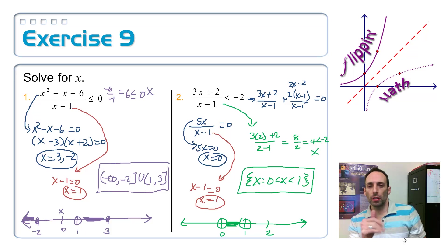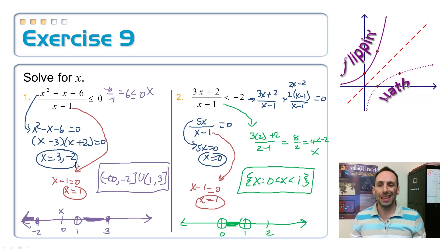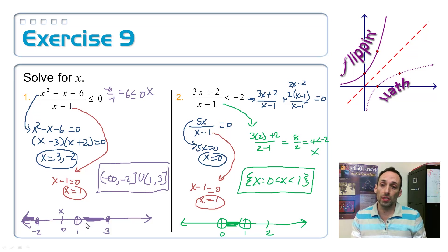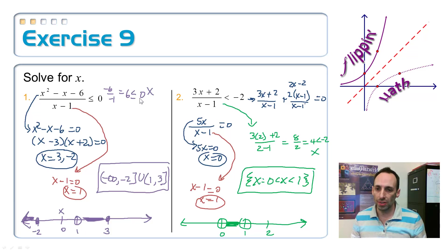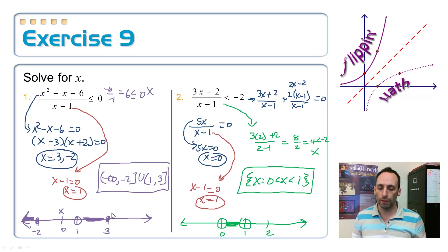Here are your solutions to those two problems. The left one was more straightforward because it was already pretty much equal to zero — no fraction combining needed. Set the top equal to zero: factor it, and get critical values of 3 and −2. Set the bottom equal to zero: get a critical value of 1. So there are three critical values total. Put them on a number line and test with x = 0.